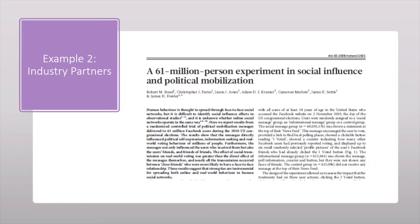Example two is partnering with people in industry. This is an older study when partnering with Facebook was very new — it's become harder with these big platforms. Political scientists and Facebook researchers partnered during an election season and looked at how information about who in your Facebook social network voted exerted social pressure, finding that social influence does have a mobilizing effect within the Facebook platform.